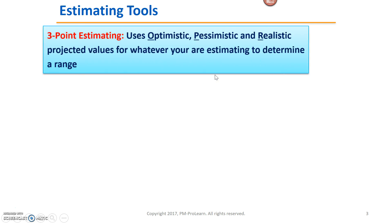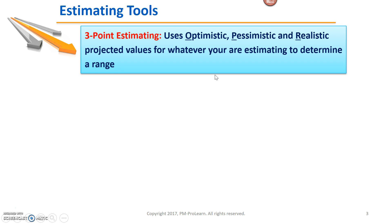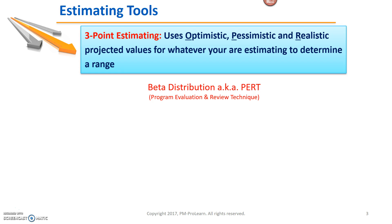Let's look at the estimating tool of three-point estimating. It uses optimistic, pessimistic, and realistic projected values for whatever you're trying to estimate in order to determine a range. Optimistic, pessimistic, and realistic could also be called best case, worst case, and most likely. We're going to use those three points to do what's called a beta distribution, also known as PERT, which stands for Program Evaluation and Review Technique, and come up with a range.